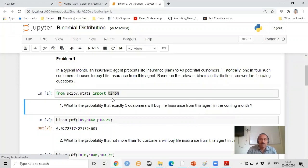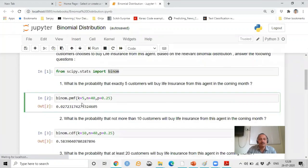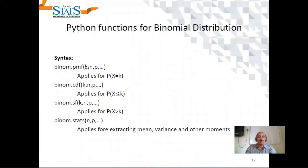Now in the binom module, we have a function PMF. The PMF function applies for scenarios when we need to find the probability that X equals K. When we need to find probability X less than or equal to K, which is the cumulative distribution function, we use CDF. When we want to find X greater than K, we use the SF function. For finding mean, variance, and other moments, we use the stats function.